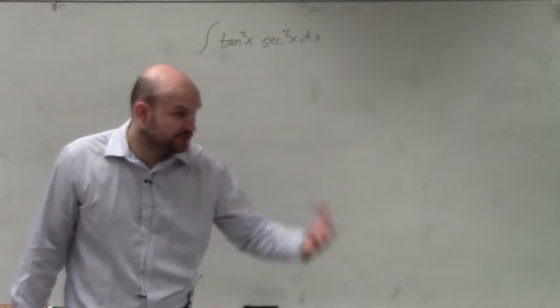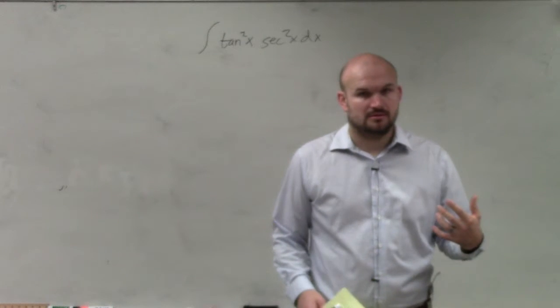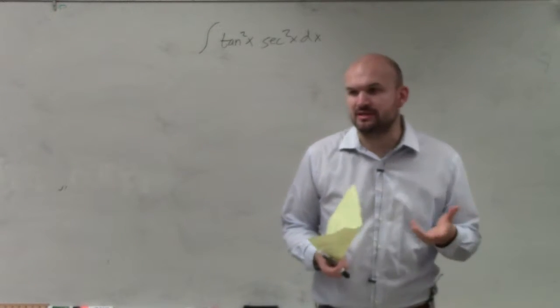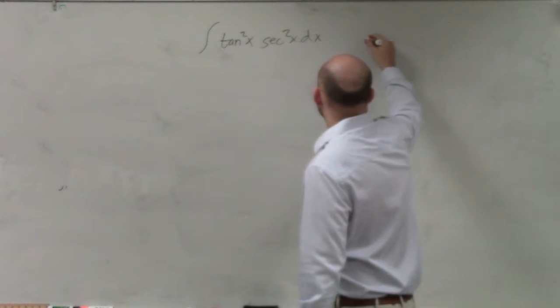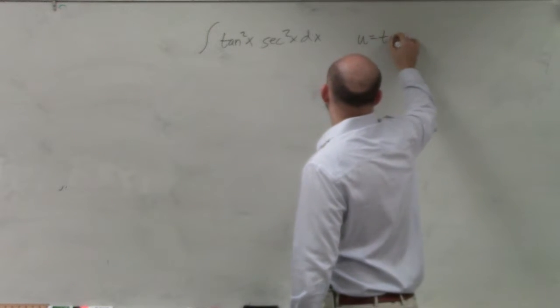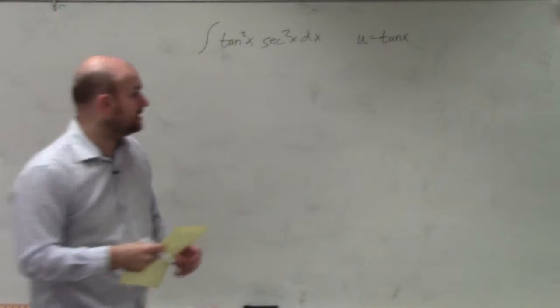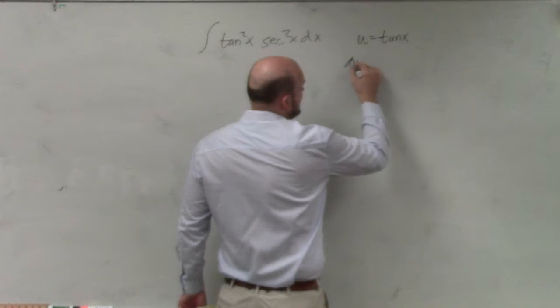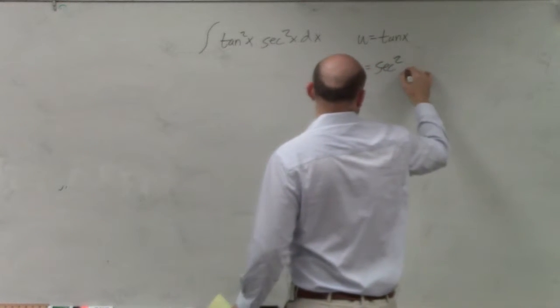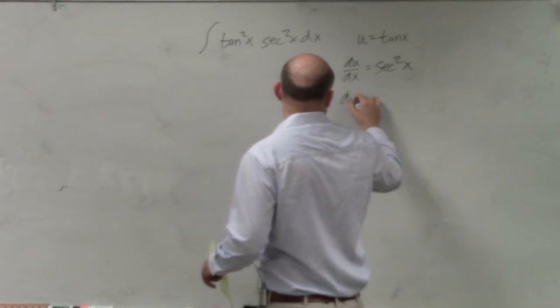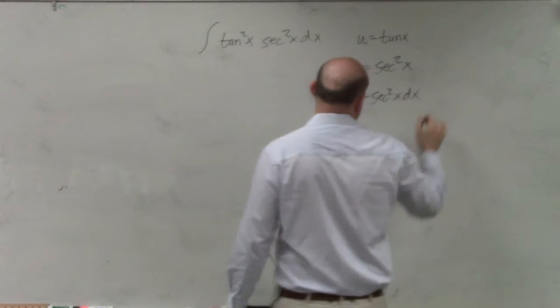If I'm looking for u times du - that function times its derivative - what if I make u equal to tangent of x? Because that would be under my u squared. Therefore, du/dx is going to equal secant squared of x. So therefore, du is equal to secant squared of x dx.